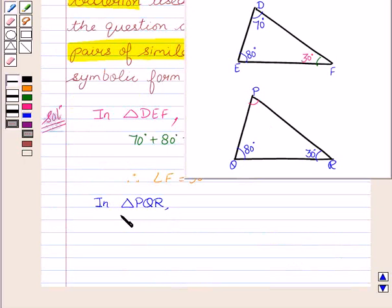In triangle PQR, we see that 80 degrees plus 30 degrees plus angle P is equal to 180 degrees, by angle sum property.